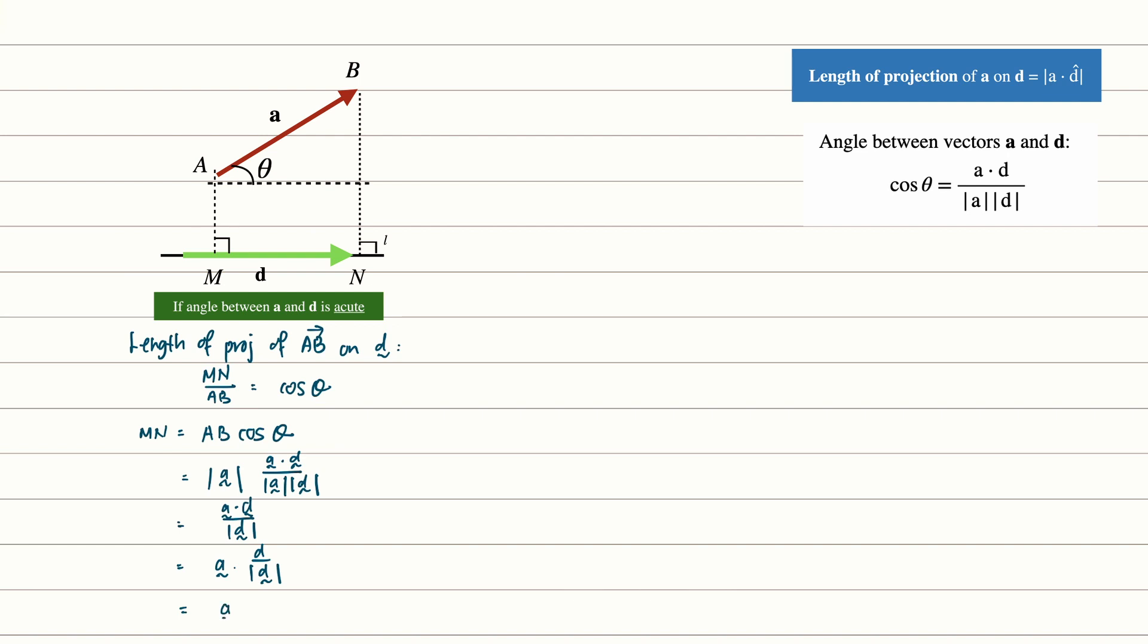Thus the length mn, which is the projection of ab onto d, is simply a dot unit vector of d.